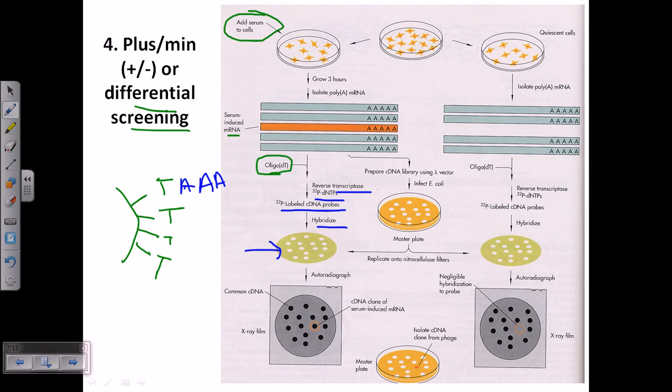Now on the other hand, if we don't expose these cells onto the serum, then what will happen? Most of the mRNA which are developed in normal time are expressed, but that particular mRNA which is the serum induced mRNA will not be expressed in this case. So what we get, instead of five, we get only four mRNAs to be expressed.